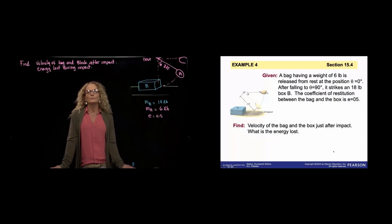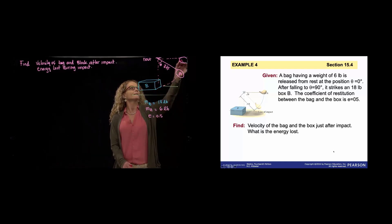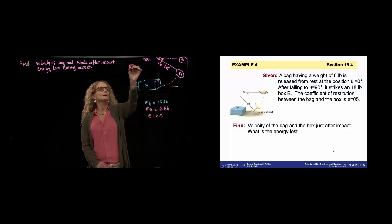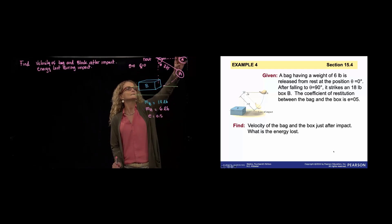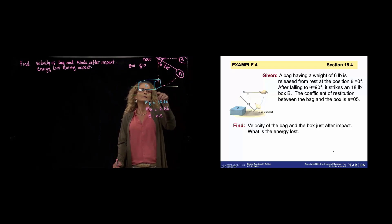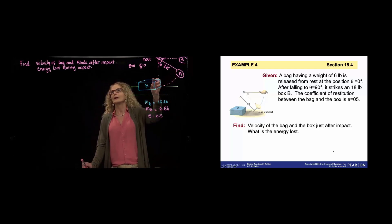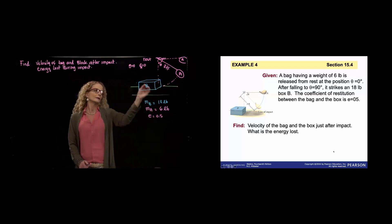We have a problem of impact. We have a bag — this bag is bag A — theta is measured from here, and it's released when theta equals zero. The velocity of A is equal to zero, so it's released from rest. It's dropped and since it's attached to a cord, it will hit this block. They want us to find the velocity of that bag A and block B after impact, and the energy loss during that impact.